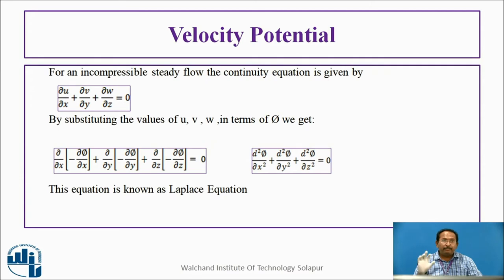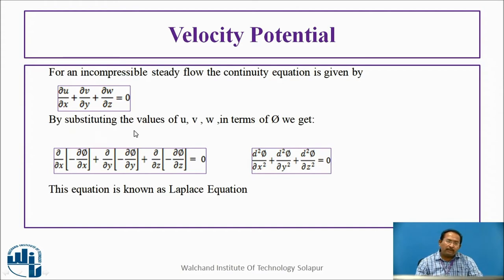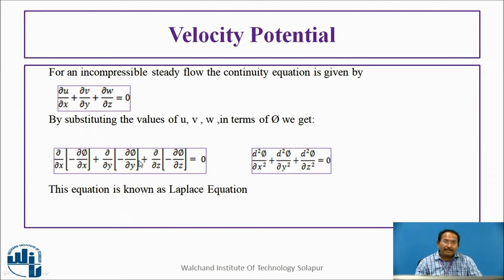Now we will see the derivation. For an incompressible steady flow, the continuity equation is given by: du/dx + dv/dy + dw/dz = 0. By substituting the values of u, v, and w in terms of phi, we get: d²φ/dx² + d²φ/dy² + d²φ/dz² = 0. This equation is known as the Laplace equation.